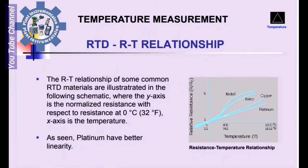RTD Resistance-Temperature Relationship: The resistance-temperature relationship of some common RTD materials is illustrated in a schematic where the Y-axis is the normalized resistance with respect to the resistance at 0°C (32°F), and the X-axis is the temperature. As seen, Platinum has better linearity.